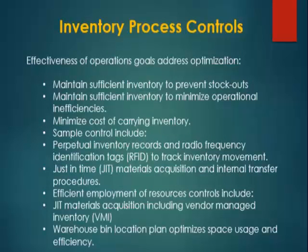Consider these inventory process controls. Effectiveness of operations goals address optimization: maintain sufficient inventory to prevent stockouts, maintain sufficient inventory to minimize operational inefficiencies, and minimize the cost of carrying inventory. Sample controls include perpetual inventory records and radio frequency identification tags to track inventory movement.